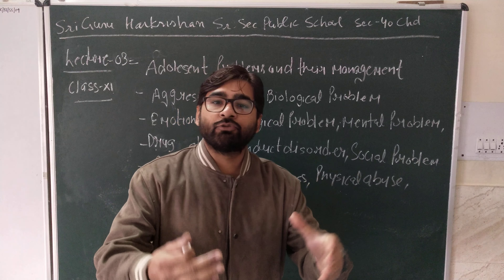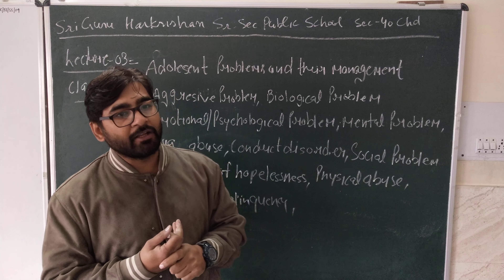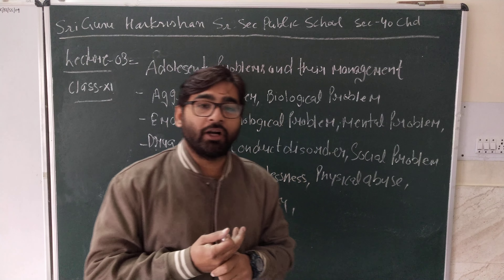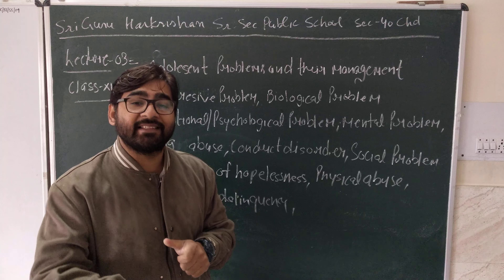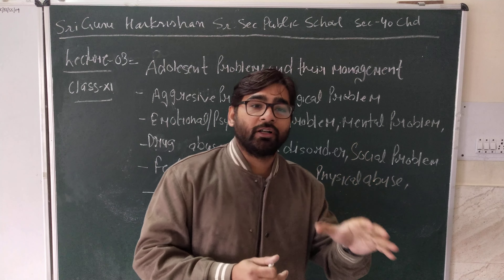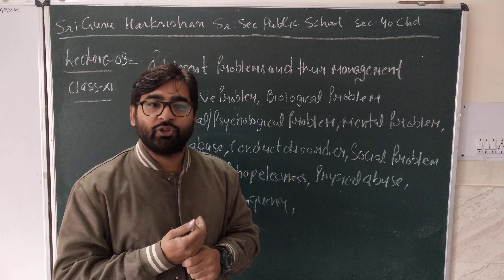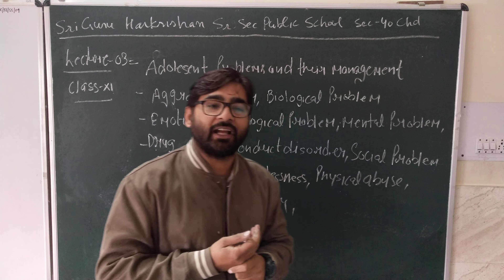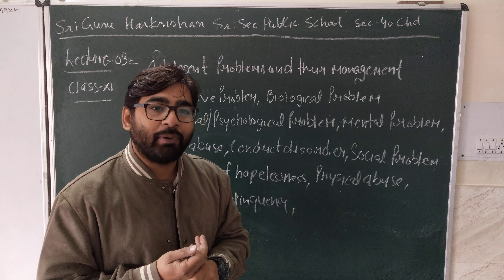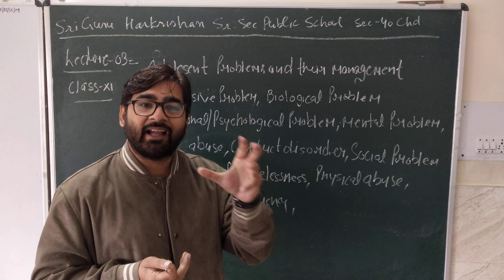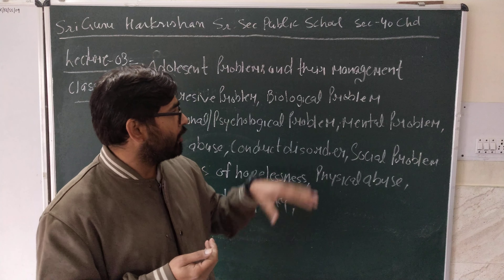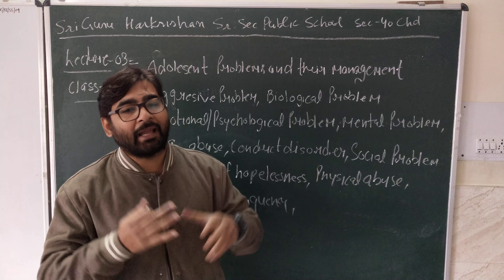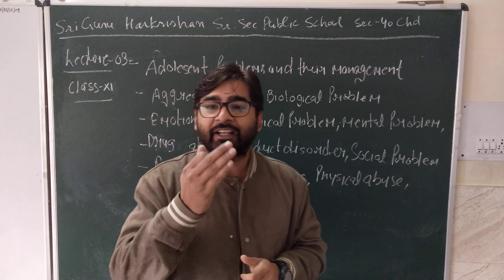Adolescence is an individual who is in the process of developing from a child into an adult. The word adolescent and adolescence came from the same Latin word 'adolescere' which means to grow up. The period of adolescence is broadly considered between 12 to 18 years. According to Sheldon, adolescence is the period in which a child tries to become capable of doing everything by himself.